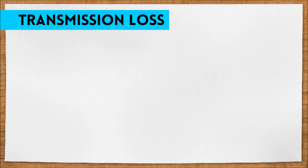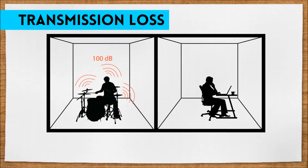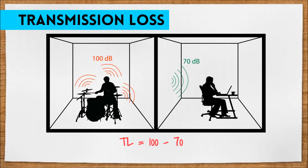Let's say 100 decibels of noise is being produced in room A, and 70 decibels makes it through to room B. So the sound level in room B is at 70 decibels. That means the transmission loss, or TL number, of the wall between room A and room B is 30.